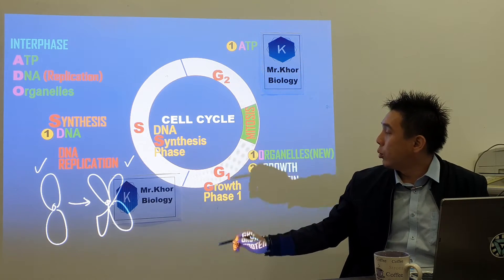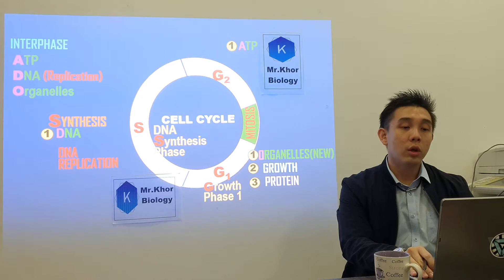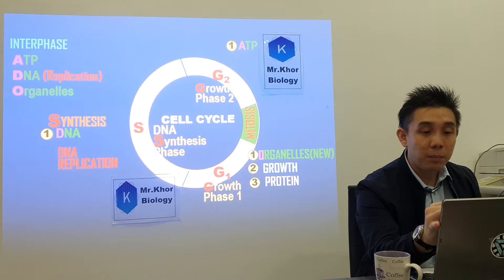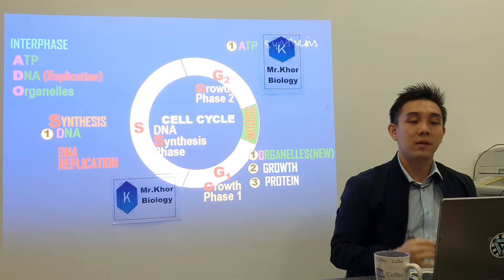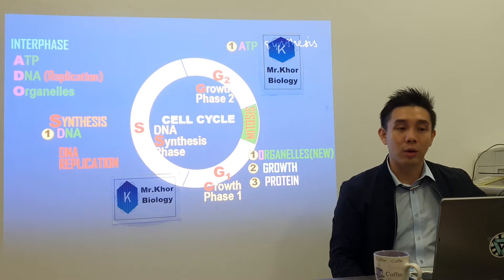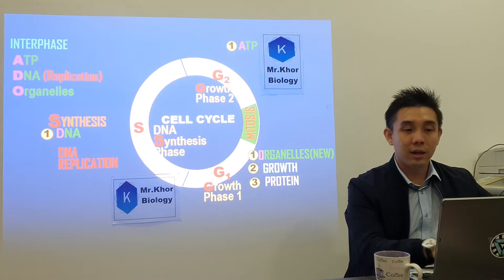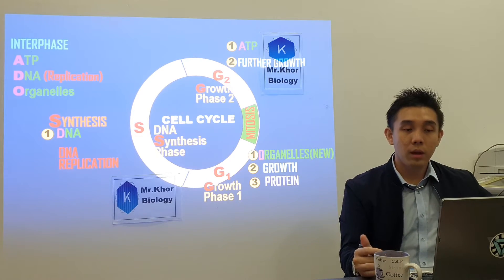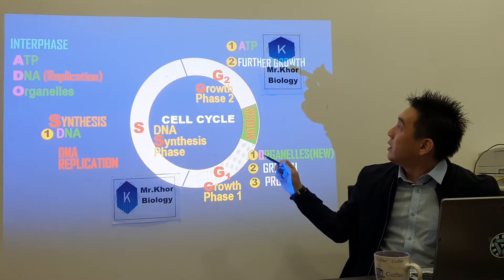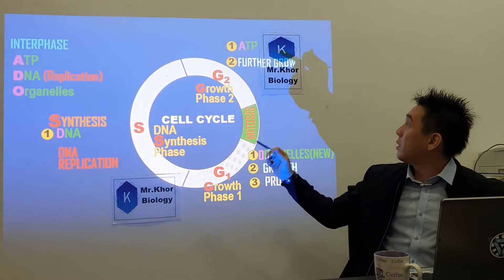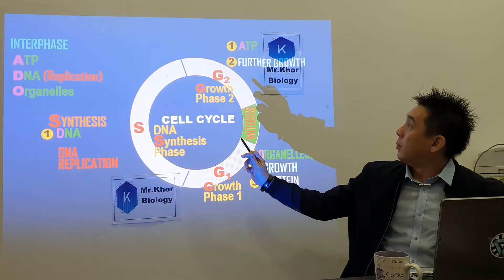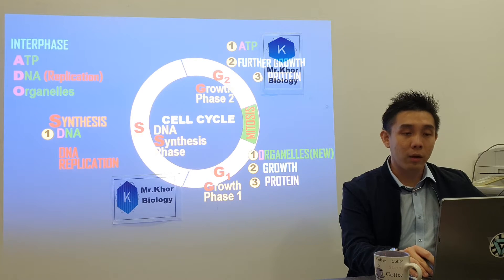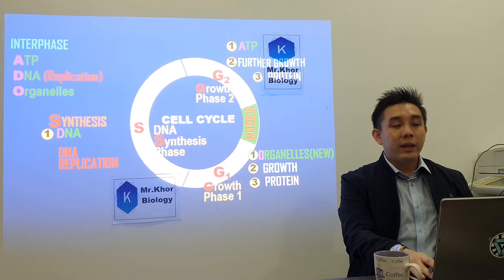For G2, Growth Phase 2 — common sense from G1. First, ATP synthesis occurs because energy is needed for cell division. Second, further growth of the cell takes place. Third, in order to grow, protein synthesis occurs. So G2: ATP synthesis, further growth, protein synthesis.